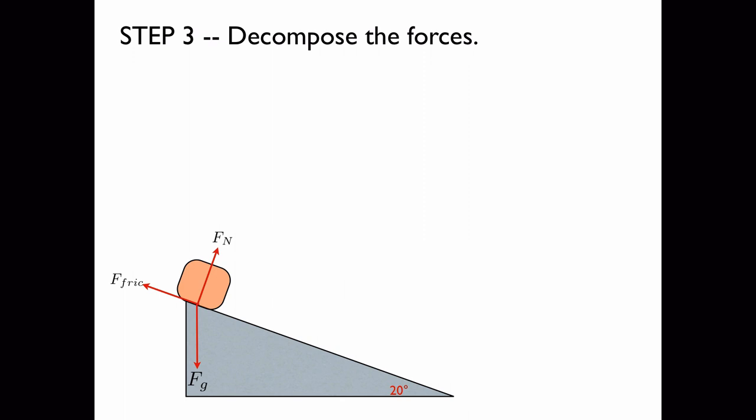Now step 3 is to decompose the forces. I plan to decompose the forces into forces that are parallel to the ramp and perpendicular to the ramp. We'll start off with the ones parallel to the ramp. I'm drawing in a few dotted lines to make it easier to decompose the gravitational force. I've also labeled that interior angle there, which is 70 degrees because it's the complement of the 20 degree angle that the incline makes with horizontal.